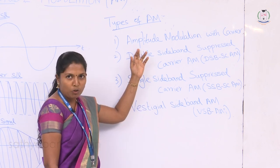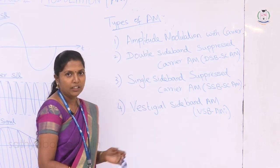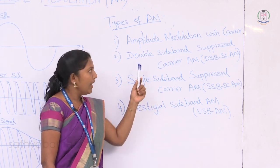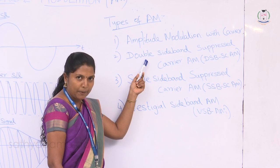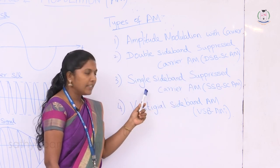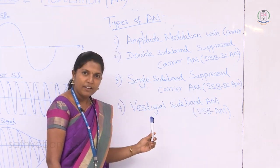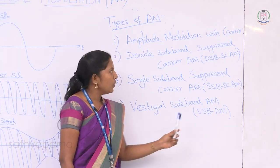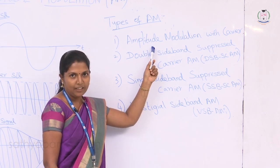Today we are going to see amplitude modulation with carrier in detail along with its derivation. The four types are: amplitude modulation with carrier, double sideband suppressed carrier AM (DSBSC AM), single sideband suppressed carrier AM (SSBSC AM), and vestigial sideband AM (VSB AM).